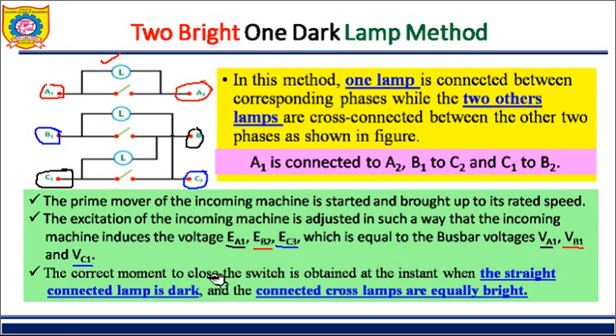The correct moment to close the synchronization switch is the instant when the straight-connected lamp becomes dark — only one lamp goes dark — while the two cross-connected lamps become equally bright at the same time. You observe when one goes dark and the other two become bright simultaneously.